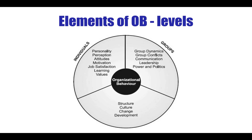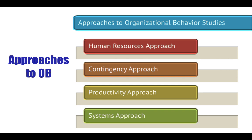Now let's look at the elements of OB — the different levels. At the individual level we discuss issues like personality, perception, attitudes, motivation, job satisfaction, learning, and values. At the group level we talk about group dynamics, group conflicts, communication, leadership, power, and politics. At the organizational level we talk about structure, organizational culture, organizational change, and organizational development.